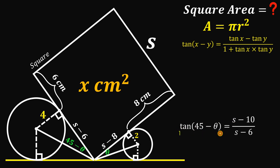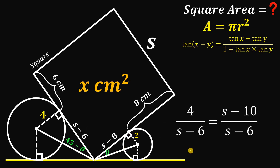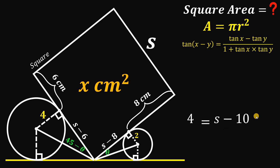Now using the big right triangle, tan(45° − θ) = opposite/adjacent = 4 / (s − 6). Setting this equal to our earlier expression: 4/(s − 6) = (s − 10)/(s − 6). Since s ≠ 6, we can cancel (s − 6) from both sides, giving 4 = s − 10. Adding 10 to both sides, s = 14.